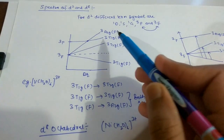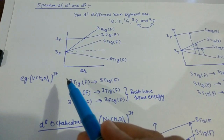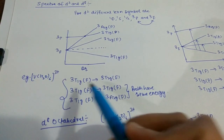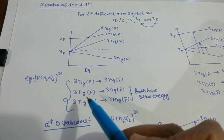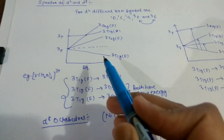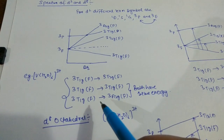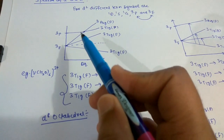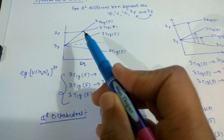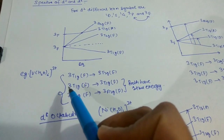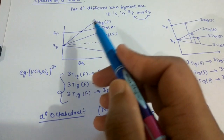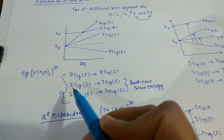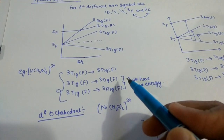Similarly, ³T₁g(F) to ³A₂g(F). So there are three types of transitions which are possible. The first is from ³T₁g to ³T₂g. The second has the lowest energy. And the last one has the highest energy.